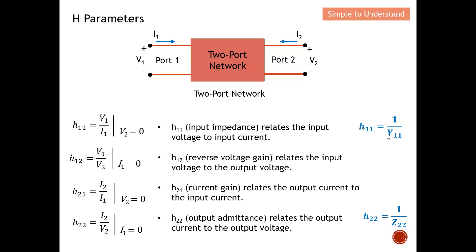H11 equals 1 over Y11, so it can be seen as an inverse Y parameter or Z parameter. Comparing against Z parameters, Z22 equals V2 over I2 when I1 is equal to zero. H parameters are called hybrid because they make use of the inverse of Y parameters, the reverse voltage gain, the current gain, and the inverse of Z parameters — four distinct types, hence the name hybrid parameters.